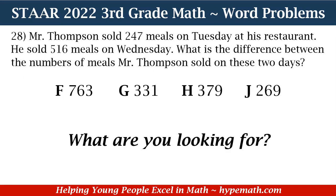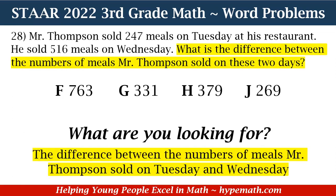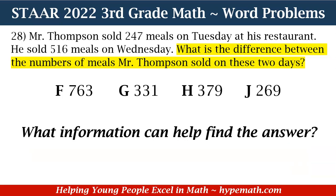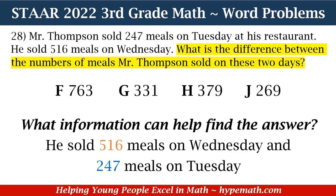In order to answer this question, the first thing we're going to ask ourselves is: what are we looking for? We are looking for the difference between the number of meals that Mr. Thompson sold on Tuesday and on Wednesday. Now that we know what we're looking for, what information can help find the answer? Mr. Thompson sold 516 meals on Wednesday and 247 meals on Tuesday.